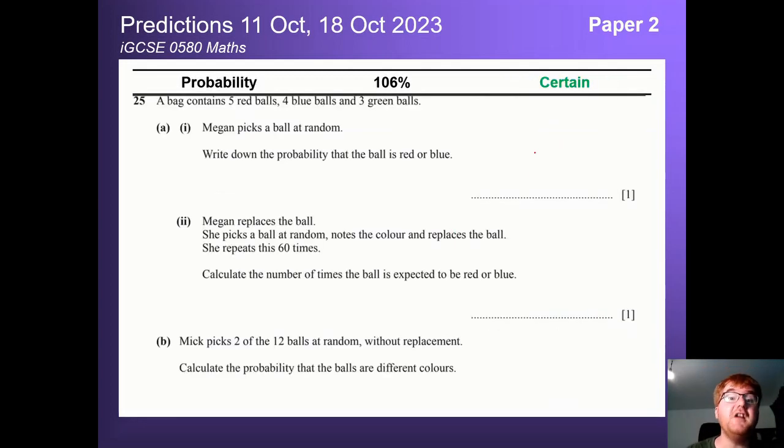And on to the certain category above 100%, and probability. Again it comes up a lot on Paper 2 and Paper 4, this is no exception. This is the very last question on a Paper 2 here. Notice they can vary these kind of questions. It could be an easy question towards the start or a really difficult question towards the end. Probability really does go across the spectrum of difficulty. You can see this question here starts off easy but as you're going to B and C it gets much harder.